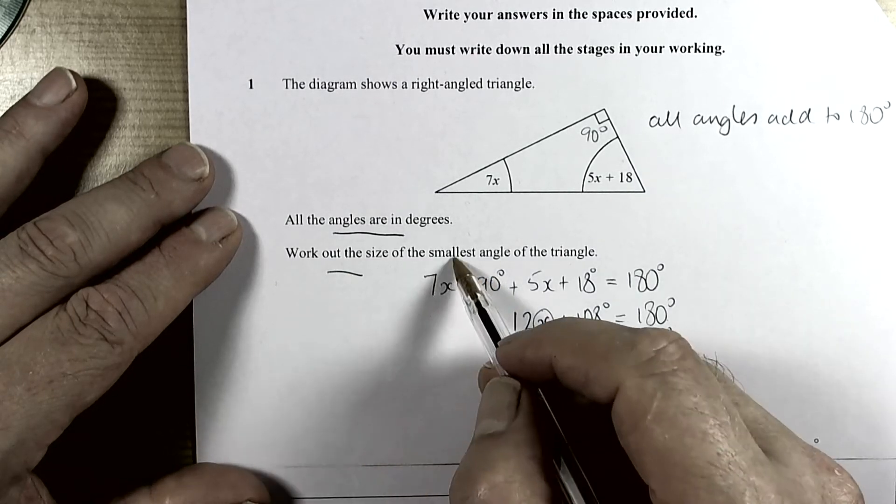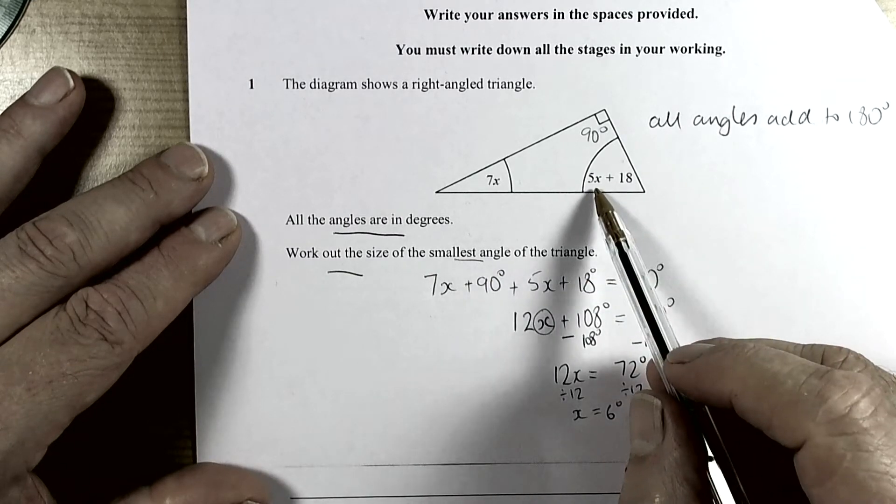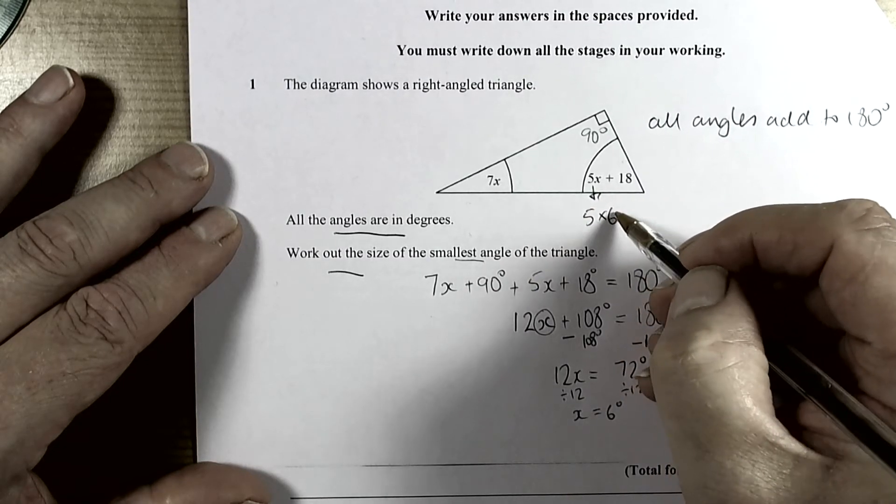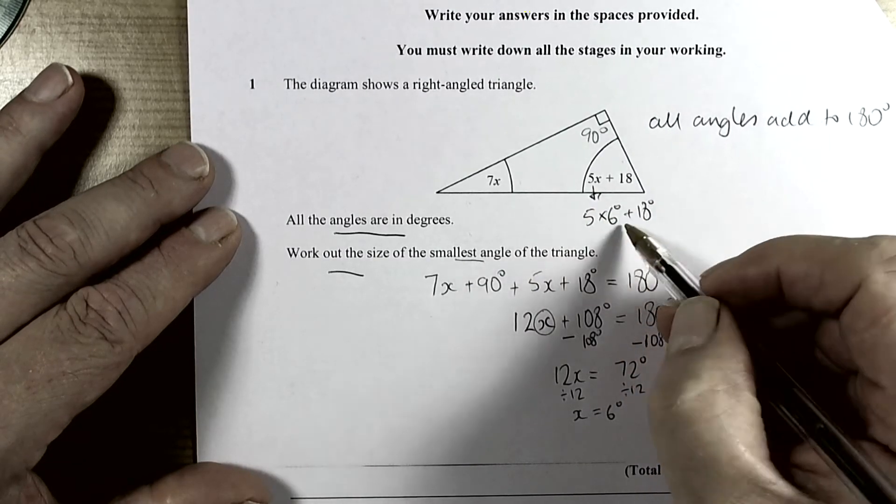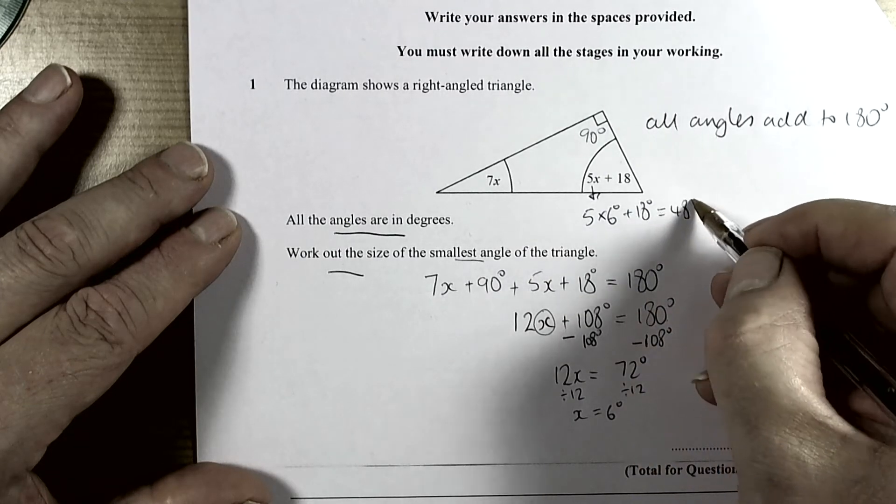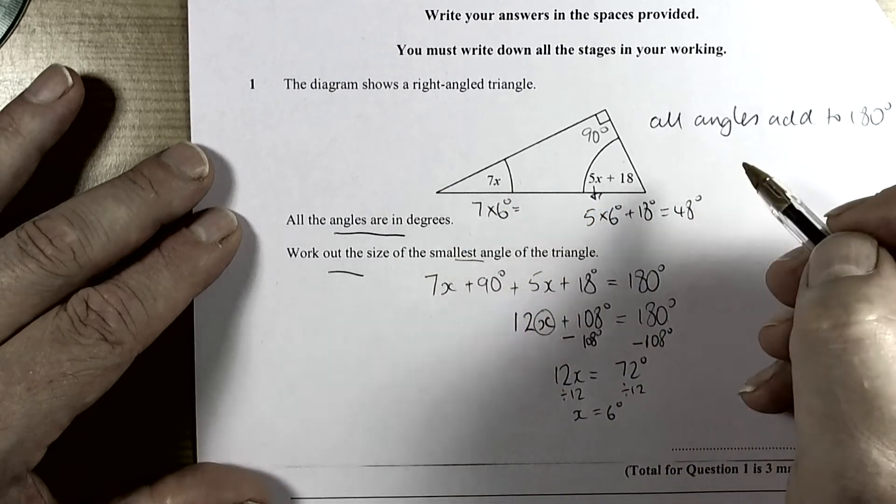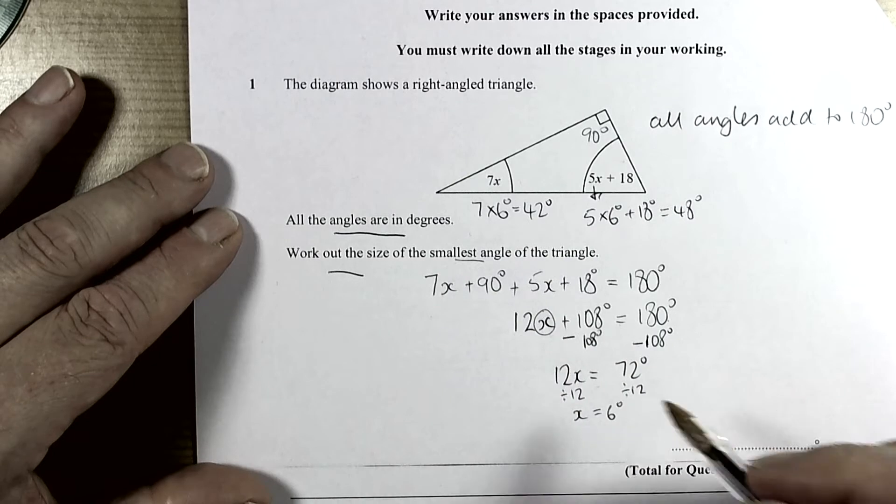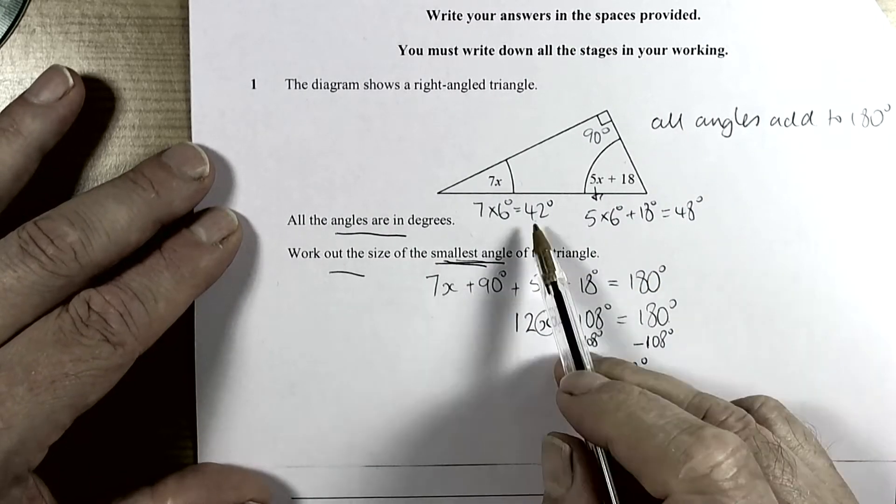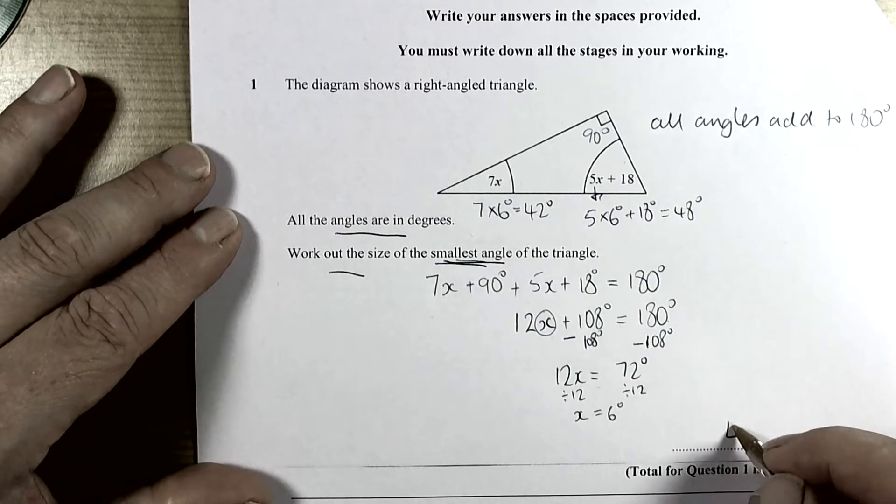It says work out the size of the smallest angle. We have to check by putting the x value back in. This one here is 5 times 6 plus 18. We do the 5 times 6 first which is 30, so 48 degrees. Then we do 7 times 6 here which is 42 degrees. Because the question says work out the size of the smallest angle, we can see that the smallest angle in this triangle would be 42 degrees. So our answer is 42 degrees.